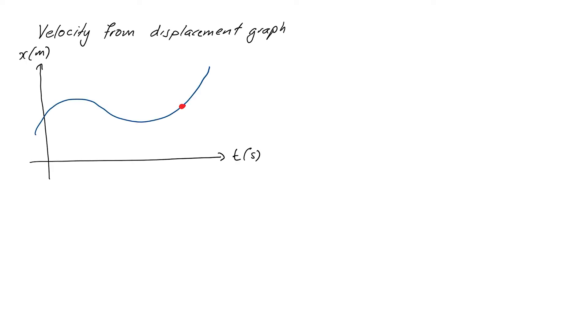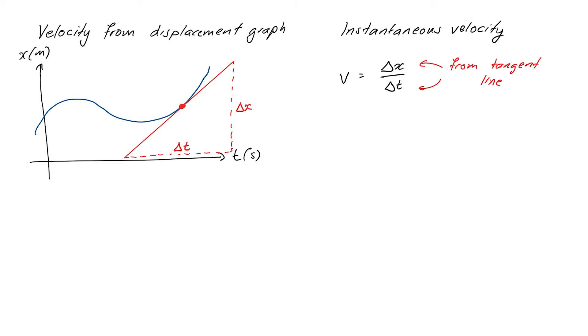In this video we're going to spend some more time looking at the graphical relationships between displacement, velocity and acceleration. We've been doing this for a while now and we're working towards our end goal of developing equations we can use to relate these things in practice. Last time we learned that we can calculate velocity from displacement by drawing tangent lines to displacement curves, and we can do the same thing to calculate acceleration from velocity curves.